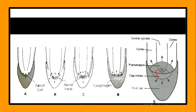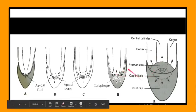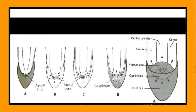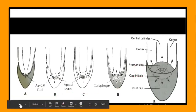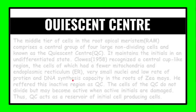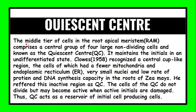At last, in type E there are also three tiers of initials. The first is related to central cylinder, second to the cortex, and third to the root cap. The epidermis originates from the root cap by periclinal division. These all were the five types.